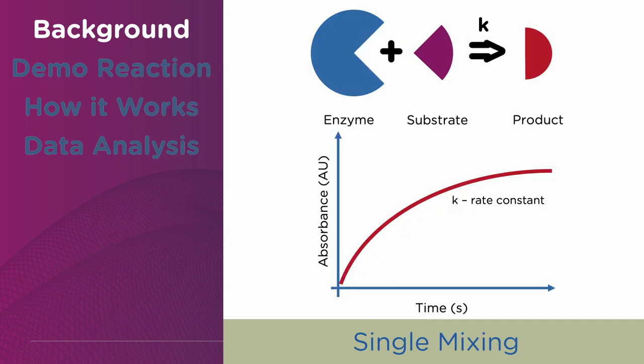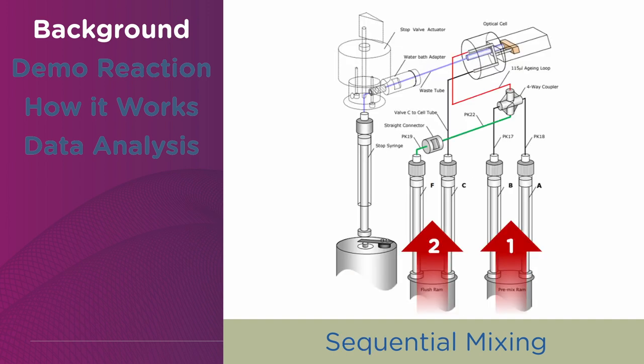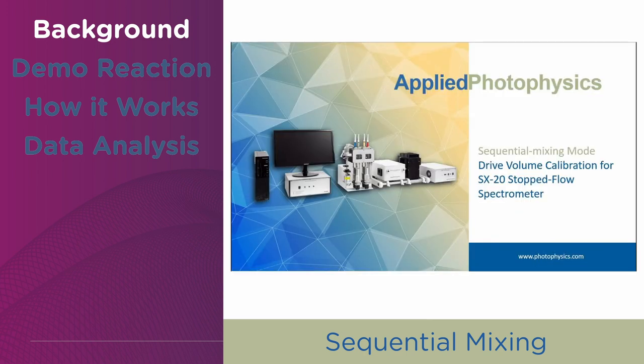Single mixing implies mixing an enzyme in one syringe and a substrate in the other, and observing an optical change as a function of time as the substrate is converted into the product. Sequential mixing, or mixing of three reagents, is also supported on our instrument. We have made a video demonstrating how to switch from single to sequential mode on SX-20, which you can check by clicking the link in the video description.